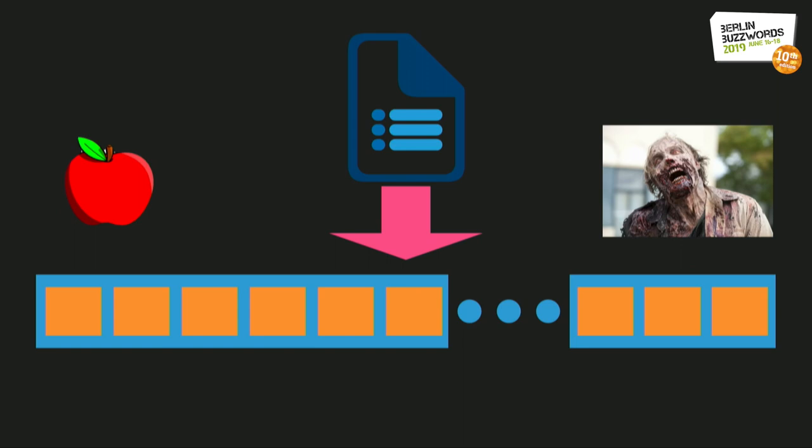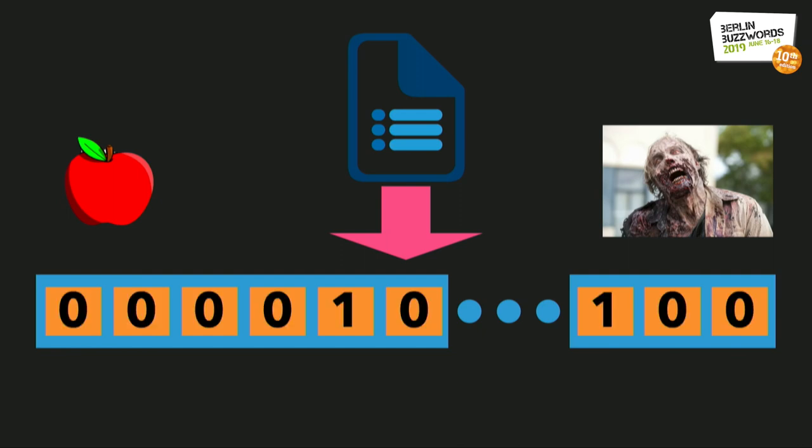It's not hard to see that by and large, the majority of the components in our document vector will be zero. This type of vector—one with lots of zeros—is called a sparse representation. And it turns out that machine learning models, in particular deep learning models, don't perform particularly well with high-dimensional sparse representations.